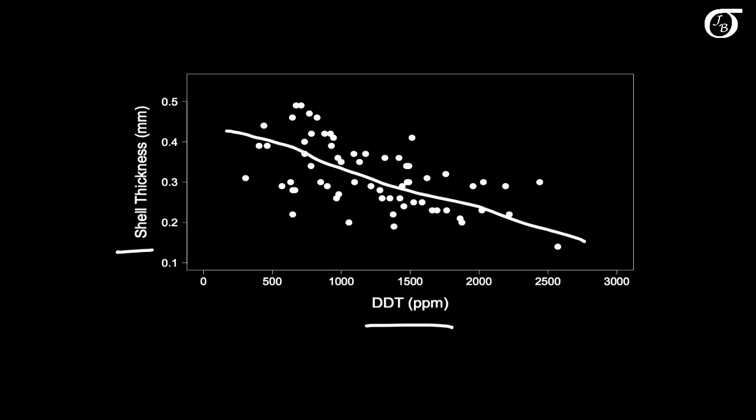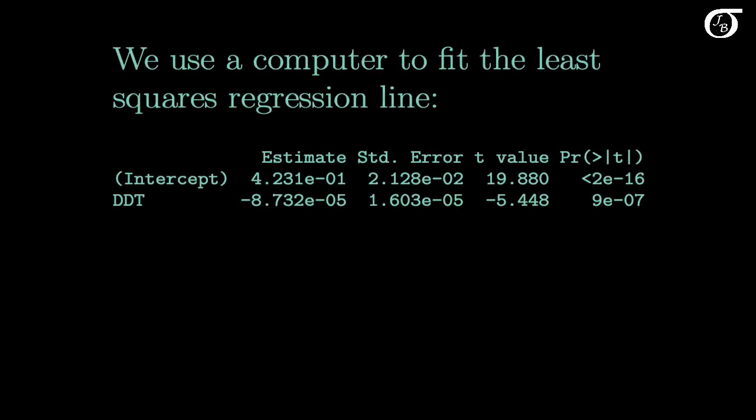We typically fit a line through points using the method of least squares, and we typically use a computer to do so. The estimates that make up our least squares line are given in this column of the output. This second line here represents our slope, and the first line represents the intercept.